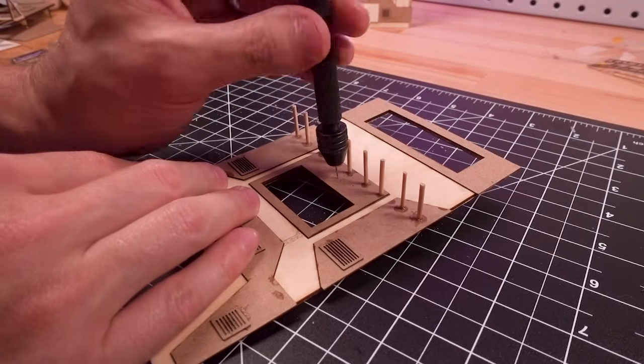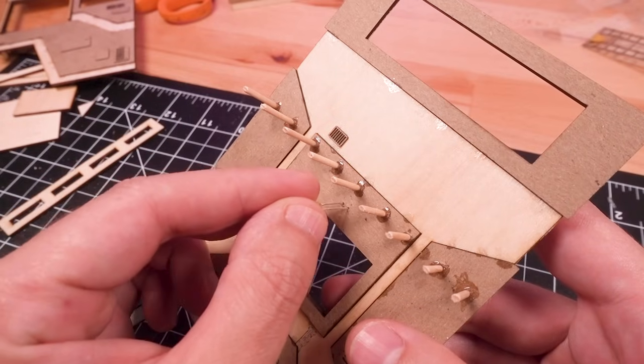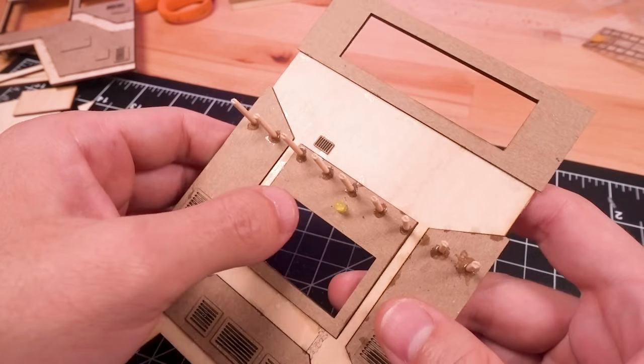Next, to prepare for the LED lighting, I drilled tiny holes for the negative and positive leads in all the places I wanted to add bulbs.